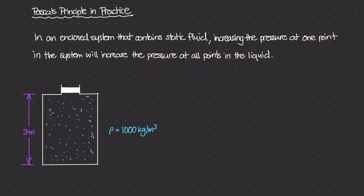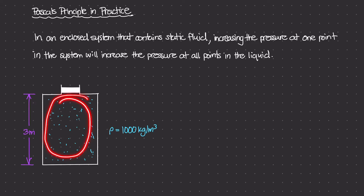Let's say that we have some kind of container here. It contains a liquid with a mass density of 1,000 kilograms per meter cubed. The container is three meters tall, and at the very top there's a little steel piston that we're going to apply some sort of force to. This principle only applies to fluids that are enclosed in a container with static fluid — all the fluid is at rest, filled to the very top, and the mass density is constant.